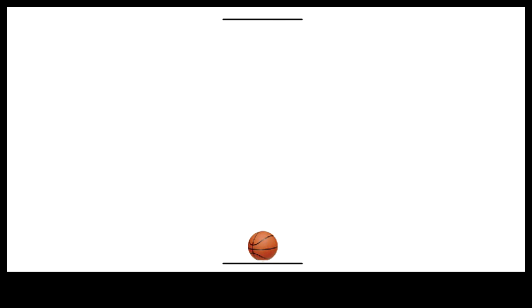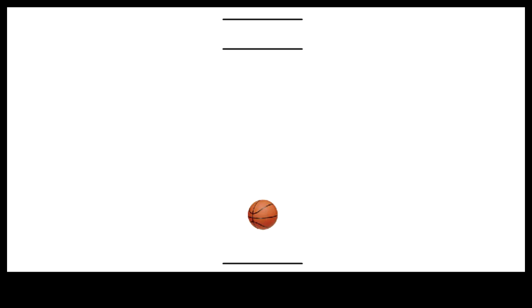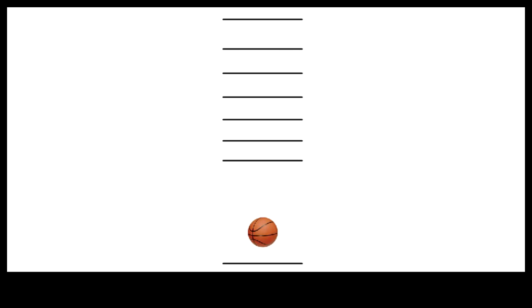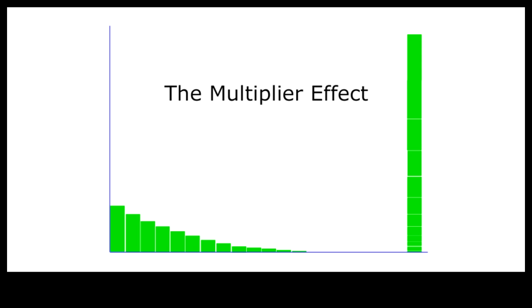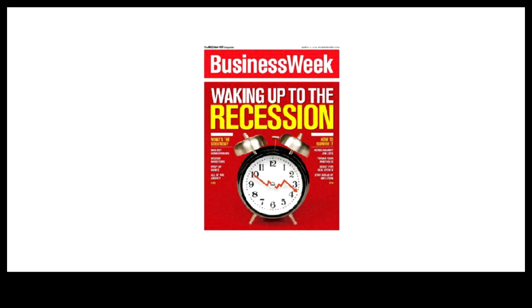Imagine dropping a ball from a certain height. The ball will bounce back part of the way and fall to the floor again. This bouncing and falling process will continue until the ball comes to a complete stop. The total distance traveled will be a multiple of the distance covered by the initial fall. This then is the so-called multiplier effect.